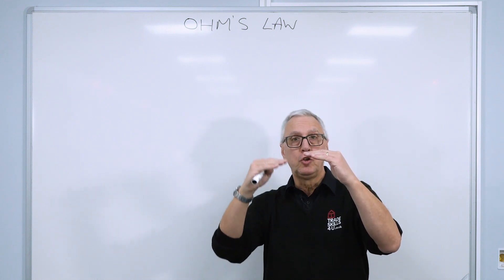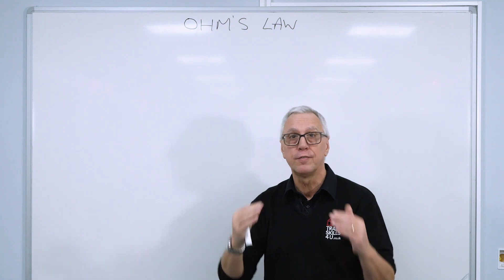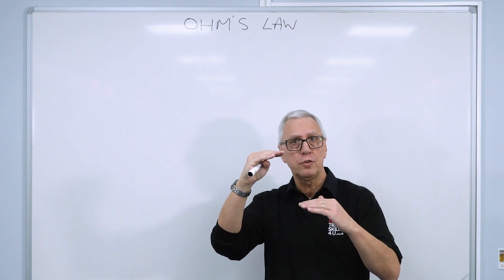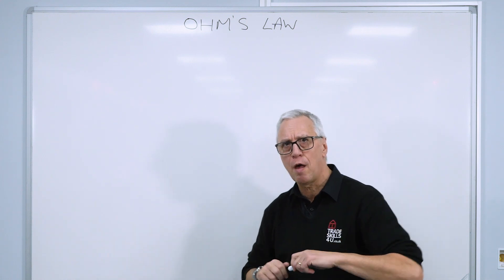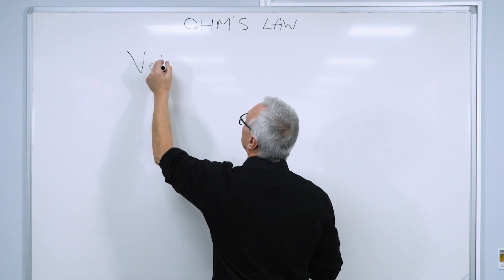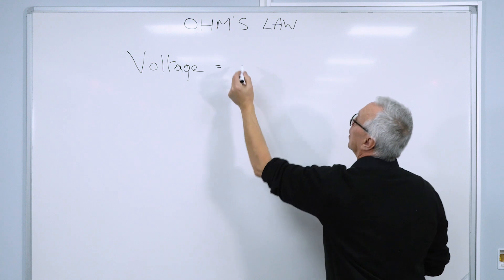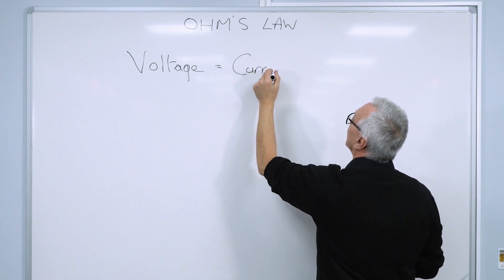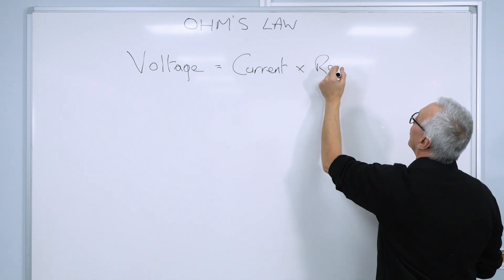You double the voltage, you double the current, but you halve the resistance, and vice versa. If you halve the voltage, you halve the current, and you double the resistance. So let's just write that on the board. And this is Ohm's law. Voltage equals the current in a circuit multiplied by the resistance.